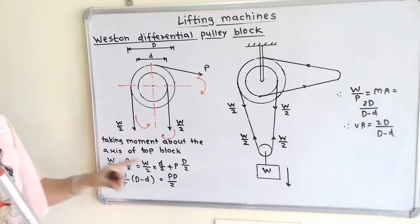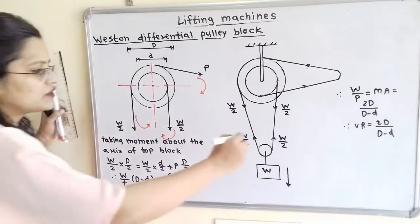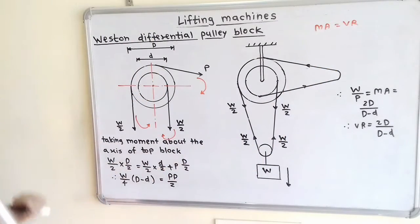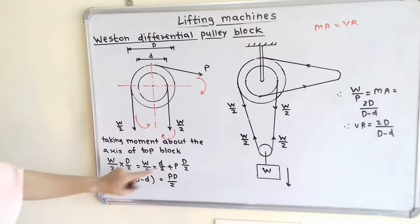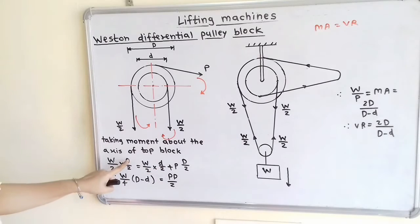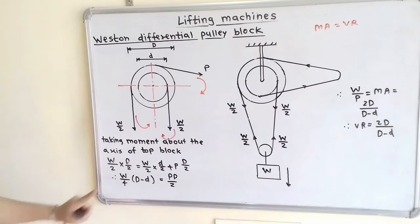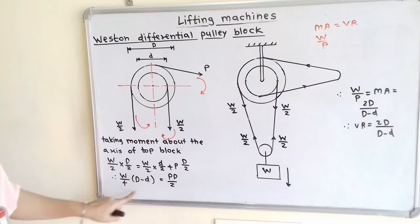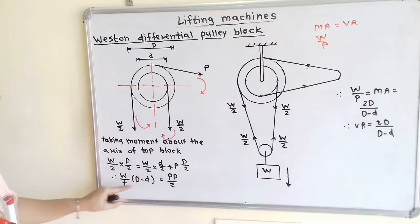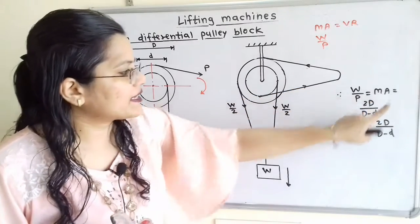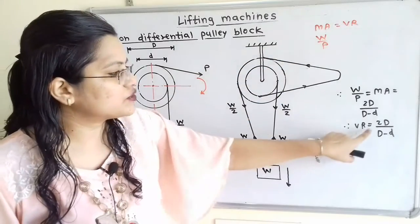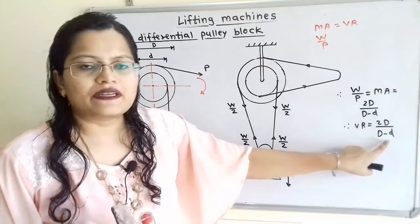Now we will find out the velocity ratio, considering this an ideal machine where mechanical advantage equals velocity ratio. Simplifying the moment equation: W/2 × D/2 = W/2 × d/2 + P × D/2, which gives (D − d) × W/4 = P × D/2. Therefore, mechanical advantage W/P = 2D/(D − d). Since it is an ideal machine, velocity ratio is equal to 2D divided by (D minus small d).